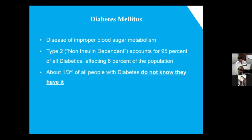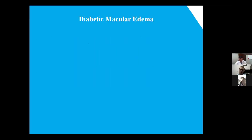Diabetes is a disease of improper sugar metabolism, and it affects a lot of the body — but in particular the eye is affected. Most of the people I see are type 2 diabetics. One interesting thing about this disease is that a lot of people don't actually know they have it, so merely showing up and seeing us is already a step forward when it comes to treating this disease and the complications that can come from it.